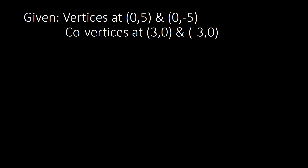So let us have our given information for the vertices and the co-vertices. We are going to write the standard equation based on those two given. First, we are going to know the orientation of our ellipse based on the given. Then we also have to find the center, find our A so that we can have our A squared, and also find B so that we can have our B squared.